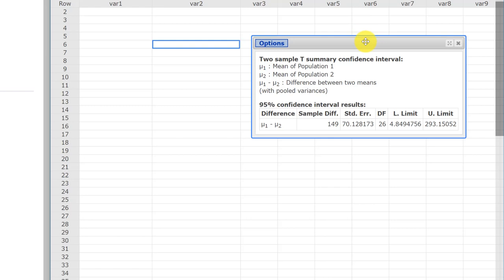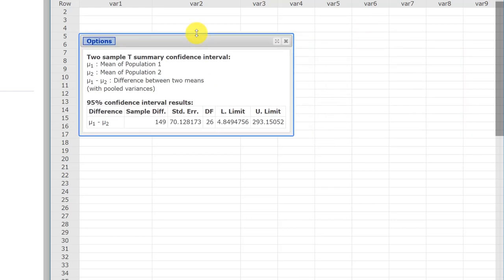And we bring up our answers here. We've got, again, our mean difference, which was 149. We've got our standard error calculated for us, the degrees of freedom calculated. But there they are: the lower limit, 4.85, upper limit, 293.15.